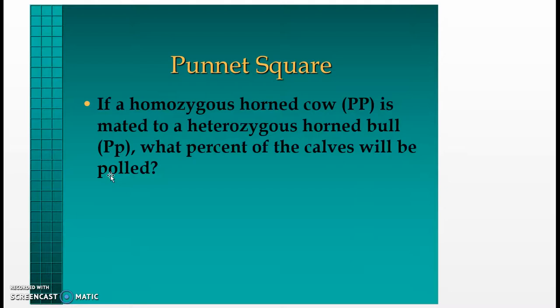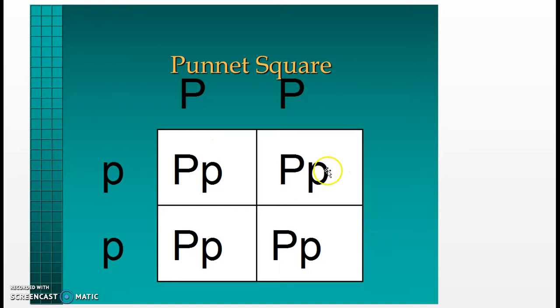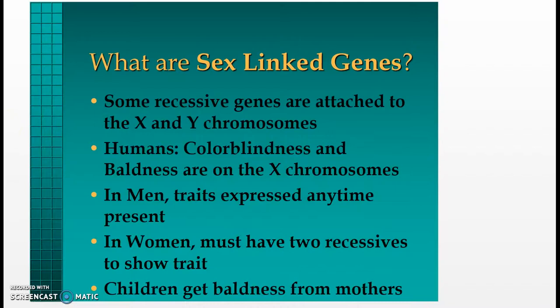If a homozygous horned cow with two uppercase P's is mated with a heterozygous horned bull, what percent of the calves will be polled? Note: there is a typo in the slideshow. Correcting for this, in this mating there will be 50% homozygous horned animals that will always produce horned animals, and 50% heterozygous horned animals. Still, 100% of the offspring will contain horns.